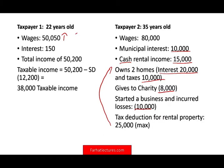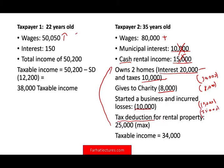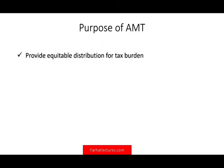They have wages of $80,000. The $10,000 municipal interest is not taxable. The cash rental income is not taxable on a tax basis because they're losing. They own two homes and can deduct $20,000, plus $30,000 in itemized deductions, $8,000 charity, $10,000 business losses, and $25,000 rental property losses. After all is said and done, taxable income is $24,000 — less than the college student's. That's the purpose of AMT: to provide equitable distribution of the tax burden.